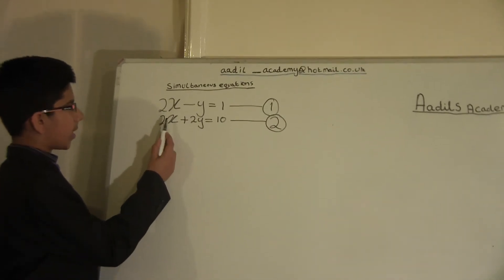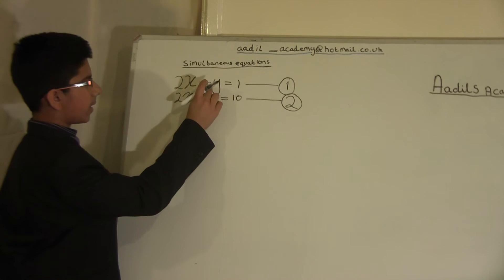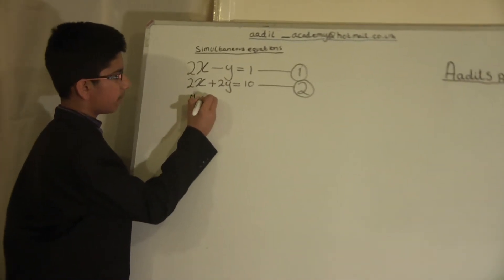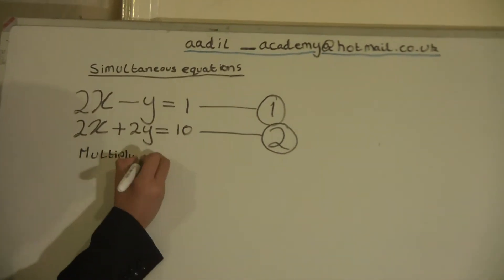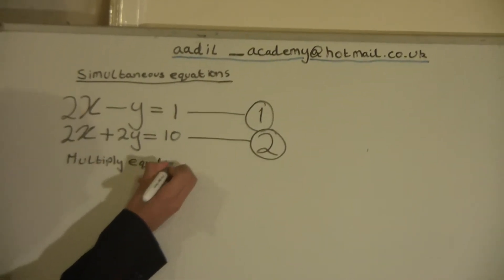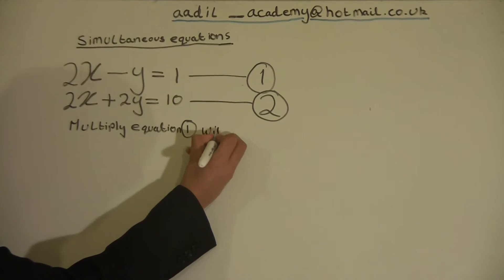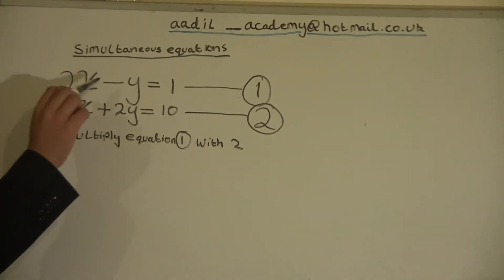We will have to multiply equation 1 to make these two the same. So we will multiply equation 1 by 2 because we want to make these two y's the same.